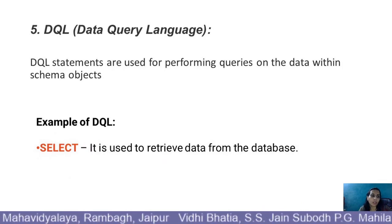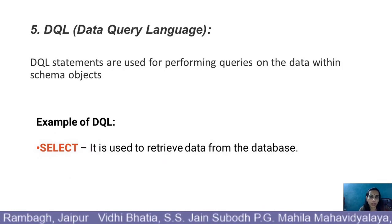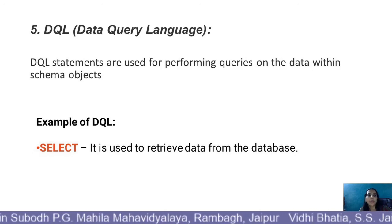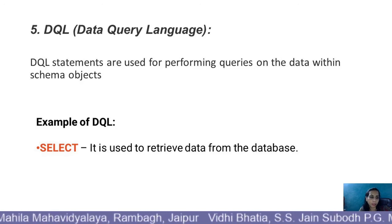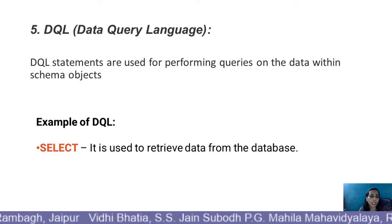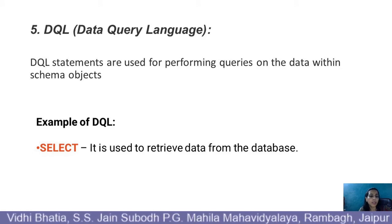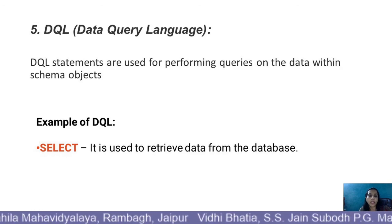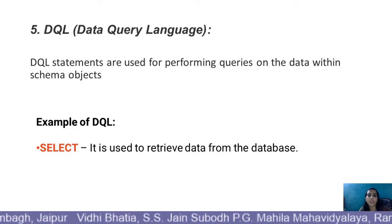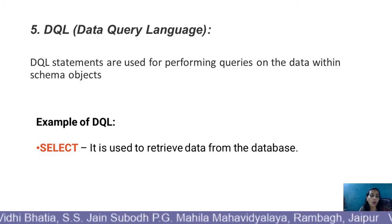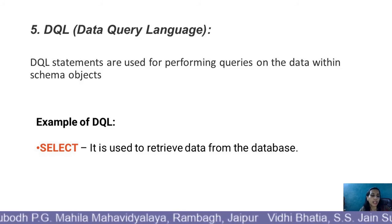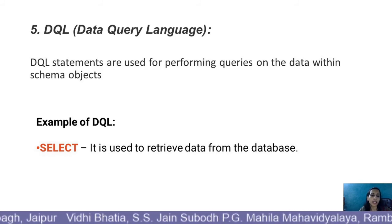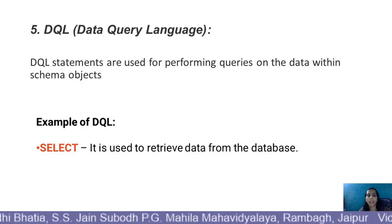DQL stands for Data Query Language. DQL statements are used for performing queries on the database within the schema object. The purpose of DQL statements is to retrieve, store, and display specific data from the database. The example of DQL is the select command. It is used to retrieve data from the database. Always remember that while using the select statement, we never make any changes to the database — it is always used to display data.